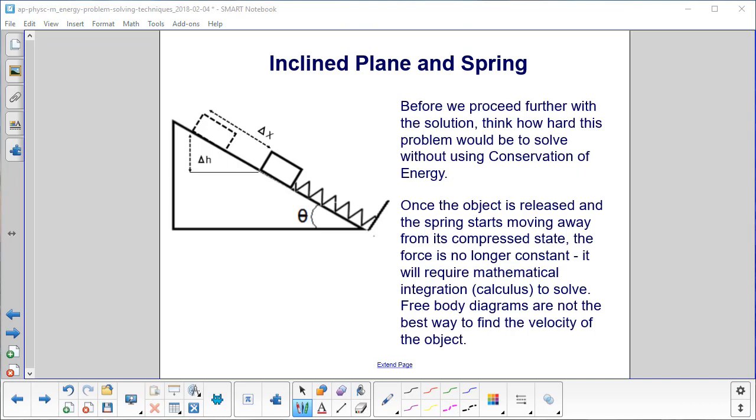Before we proceed further with the solution, think how hard this problem would be to solve without using conservation of energy. Once the object is released and the spring starts moving away from its compressed state, the force is no longer constant. It will require mathematical integration, calculus, to solve. Free body diagrams are not the best way to find the velocity of the object at any point.